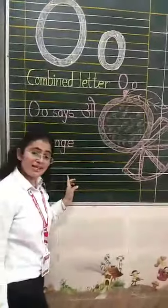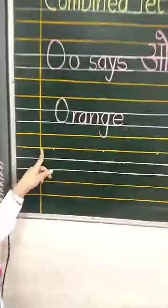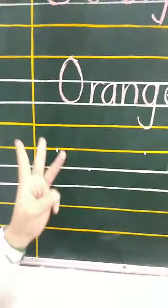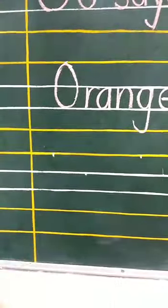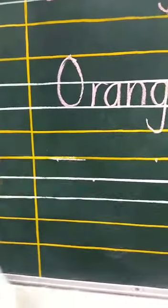So now I will tell you how to write letter O. Let's come. In your English notebook, there are four lines. One, two, three and four. You have to start from the first line. Aap ko first line se start karna hai.